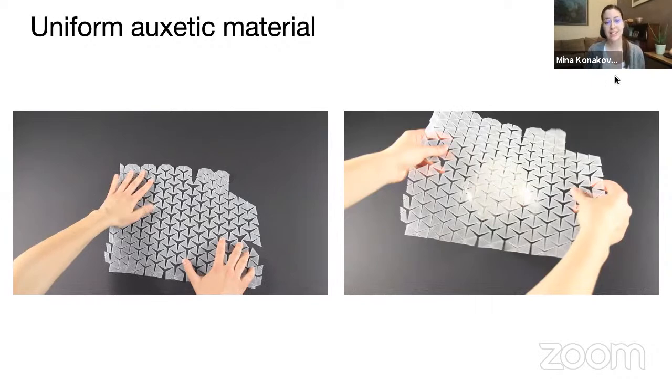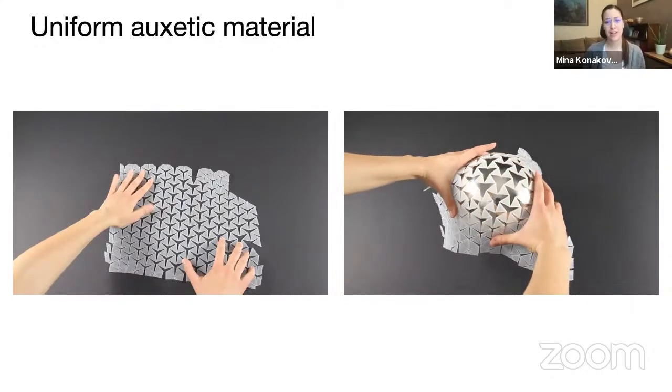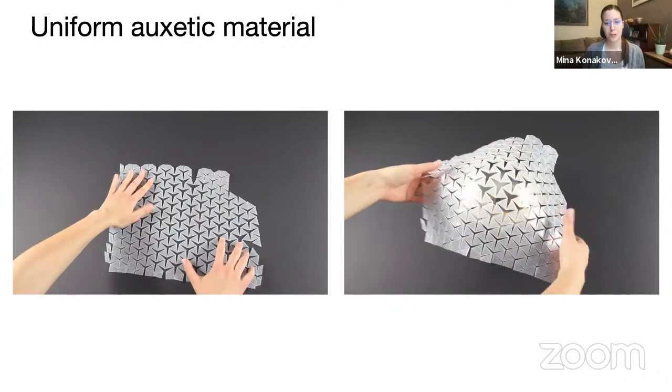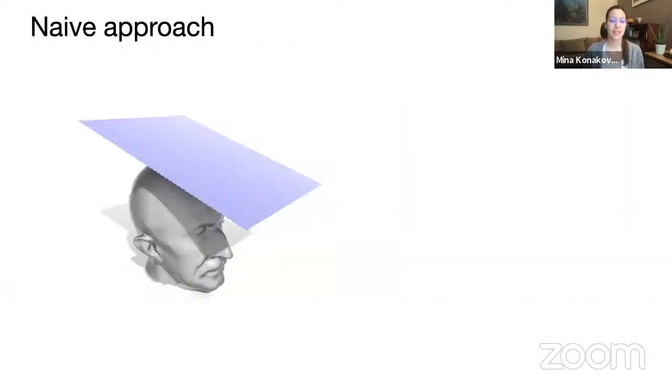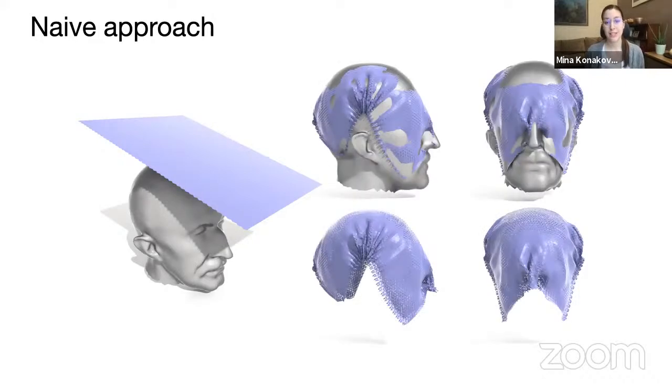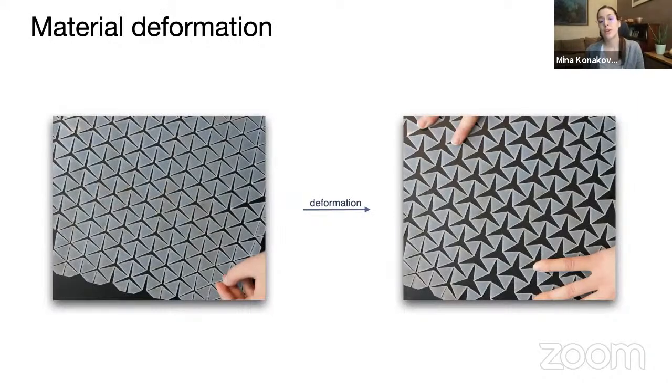But the problem that we are facing now is that if we take a piece of this auxetic material and just try to wrap it around the complex target surface like this head of Max Planck, in most cases it will fail. Because there is a global coupling happening in this triangular linkage, if you stretch the material on one side, you don't know how it will deform on the other side. It will affect the other side of the material as well. And also, it's not intuitive how to even align it with the features of the surface. So we had to look into material deformation more closely. And first,